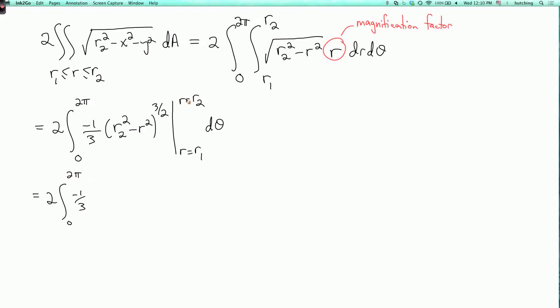Now, when I evaluate at r equals r2, I get zero. So the only thing that contributes is at r equals r1. So I have minus r2 squared minus r1 squared to the three-halves d theta. And then when I integrate over theta, what I've got here is a constant, so I just multiply by two pi. So these two minus signs cancel out, and I get four pi over three times r2 squared minus r1 squared to the three-halves.